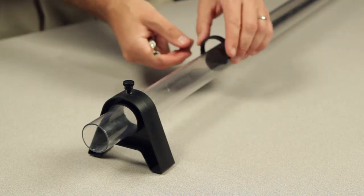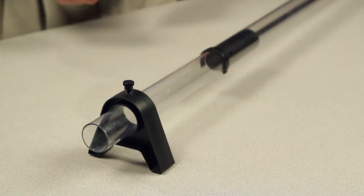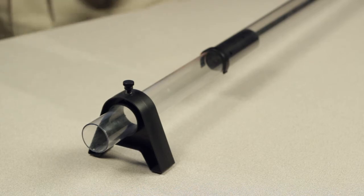Marker clips are included with the air column that can be snapped onto the tube and adjusted to mark different lengths of tube where standing waves occurred.